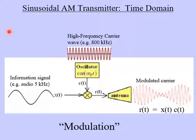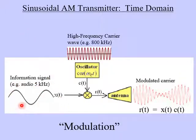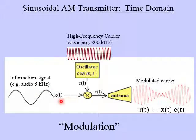Here's a block diagram of a basic sinusoidal AM transmitter. What we're looking at here is in the time domain — we'll deal with the frequency domain on the next slide. Basically, the transmitter is a simple system. We've got an information signal coming in here, X of T. For example, this could be an audio signal from voice or music, and it might have a frequency of a few kilohertz. What happens in this transmitter is that X of T, the information signal, is multiplied by a high-frequency carrier signal.